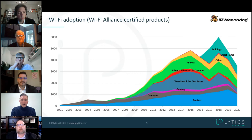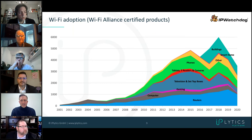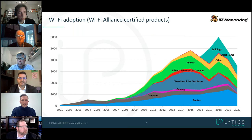Another thing we did to showcase this is we looked at the different adoption of wireless standards. The Wi-Fi Alliance has a list of certified products — basically products that make use of wireless technology. If you look at the past 20 years, it really started with wireless connections via routers and computers, then gaming, then televisions and set-top boxes, tablets and phones, and then what is really interesting in the past two or three years: smart home products and buildings. You already see in the accreditation data that these standards are incorporated in those new connected devices, and that sets the scene for where standard essential patents will be integrated.